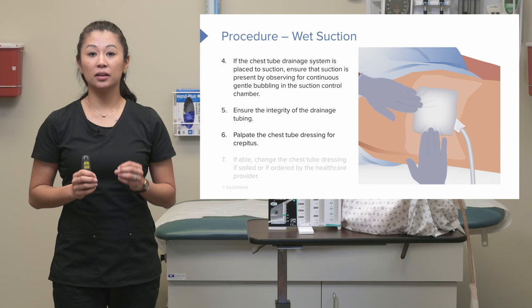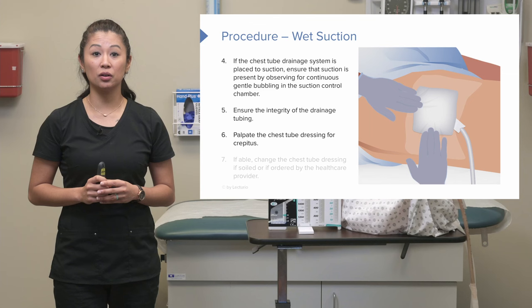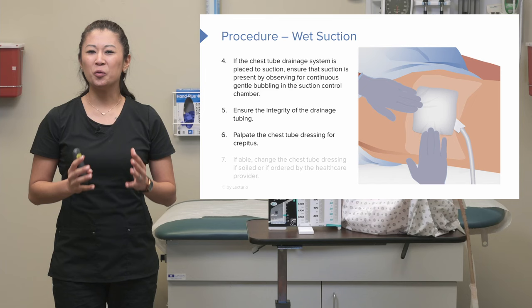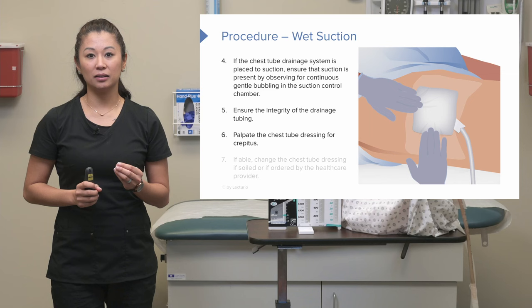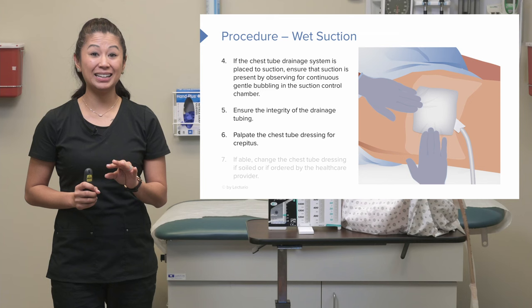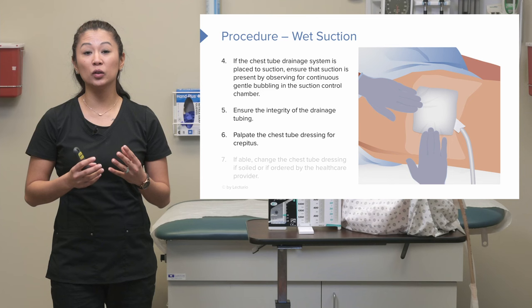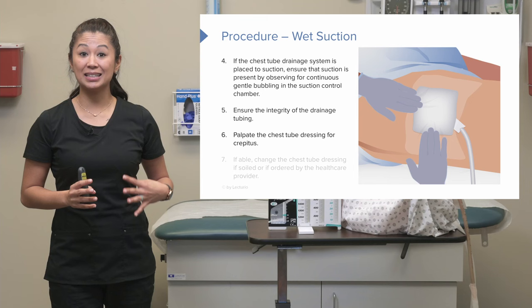We've talked a lot about monitoring the system itself, but don't forget about your patient — especially where the chest tube is inserted. Don't forget to palpate the chest tube dressing for crepitus. Think of crepitus like Rice Krispies: it means there's an air leak underneath the skin. If you palpate that chest tube dressing and feel that Rice Krispie sensation, that's not a good sign — call the doctor. Palpate around the dressing, that side of the chest, and all the way up to the neck.